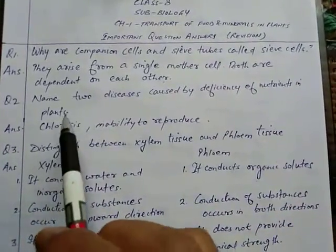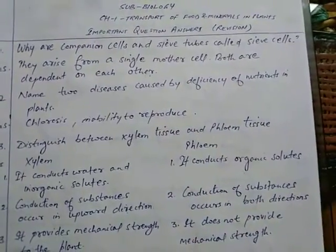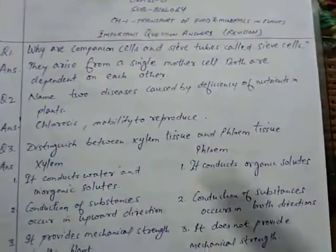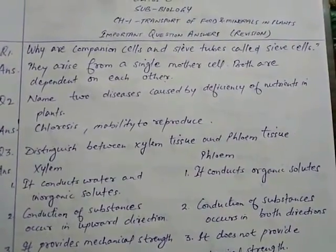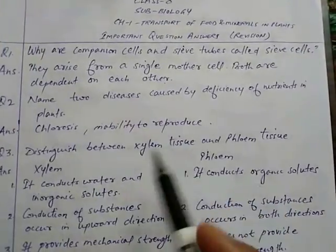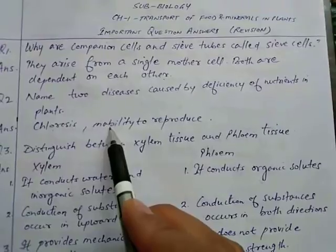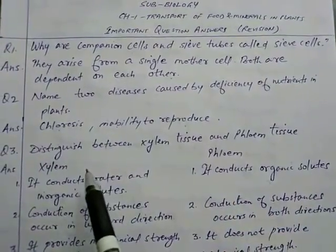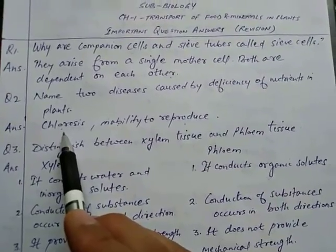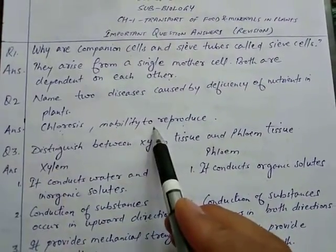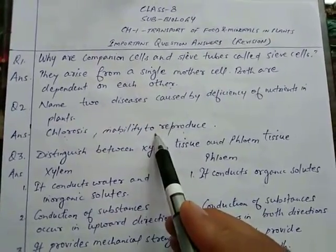Question 2: Name two diseases caused by deficiency of nutrients in plants. Whenever there is lack of nutrients in plants, they suffer from diseases. The answer is chlorosis, which is yellowing of leaves, and inability to reproduce, meaning they are not able to produce new plants.